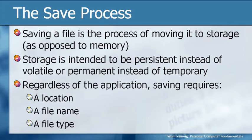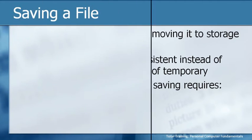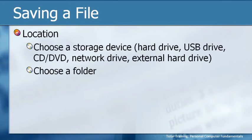Regardless of the application, saving always requires three basic things: a location to which you're going to save, a file name for the specific file, and a file type. When you choose a location, you're choosing a storage device — the hard drive inside the CPU, a USB drive, a CD or DVD if recordable, a network drive, or an external hard drive. There must be some type of physical hardware device to which you are storing the information, and these devices may also have folders to choose from.